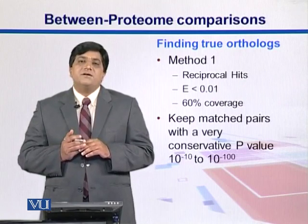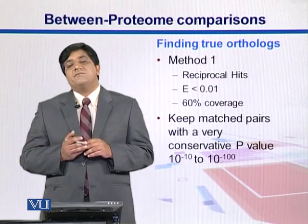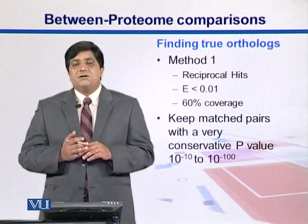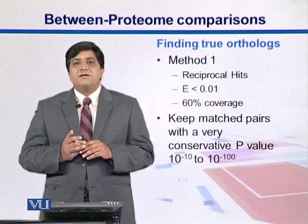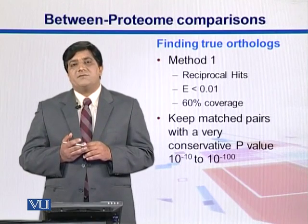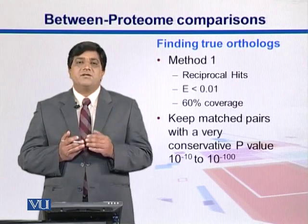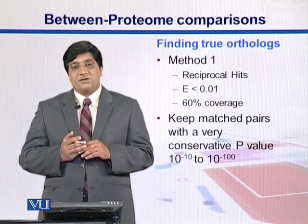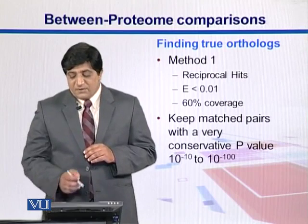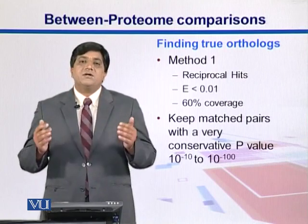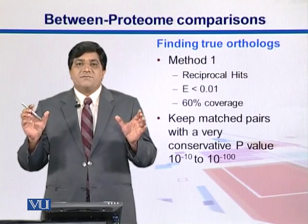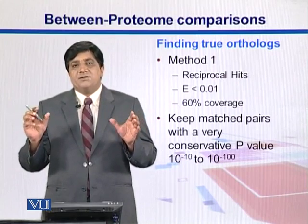We can apply criteria on reciprocal hits — for example, an E-value cutoff. When we do BLAST, it gives us a parameter called E-value; lower is better. We will talk about the BLAST algorithm later, but the key point here is that we can apply an E-value cutoff to retain those gene pairs in the reciprocal hits. For example, if E is less than 0.01, we retain them.